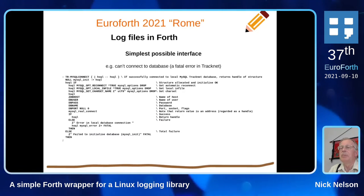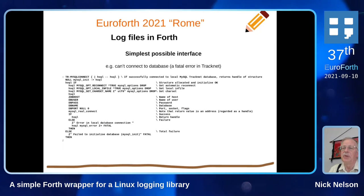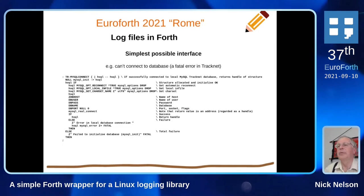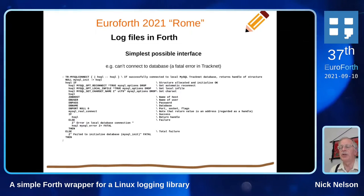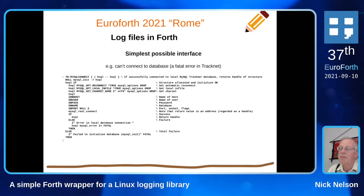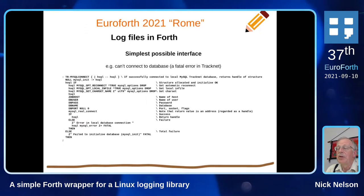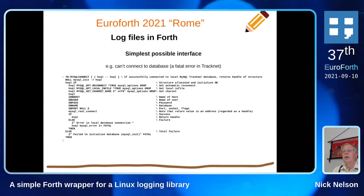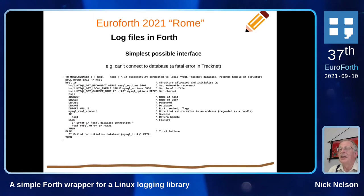Here's an example of log information added to a Forth word. This is where we're connecting to our database. At the bottom there, if you fail to get a connection, there's the text that appears, concatenated with the error message that comes back from the database itself. You can see the reason for the connection failure. For our TrackNet program a database is absolutely essential, so if you can't get a connection that is a fatal error. We have a little word 'fatal' which does the logging and then a few other things as well.